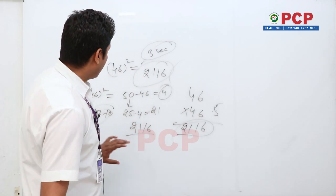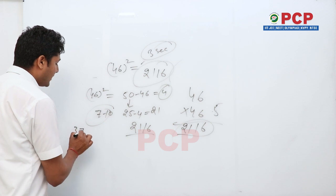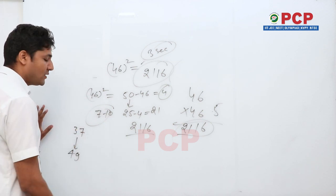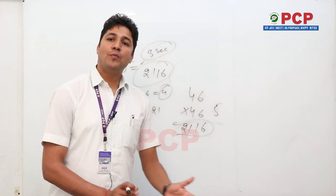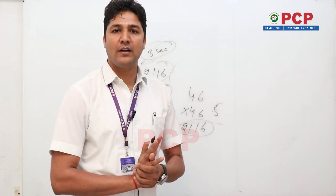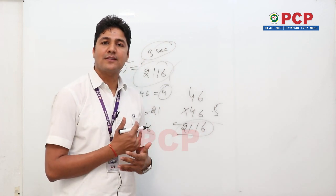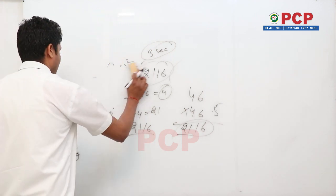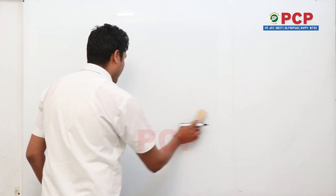I have given you two examples. Now you need to find all squares from 37 to 49 using this method. Along with that, also practice the 2×2 multiplication method so your cross multiplication practice becomes very good, and after that you will be able to do very fast calculations. What about numbers beyond 49?